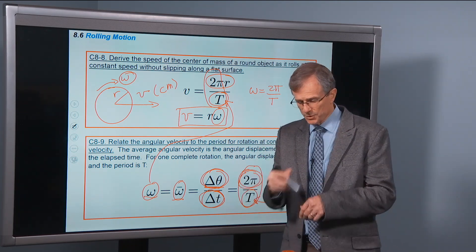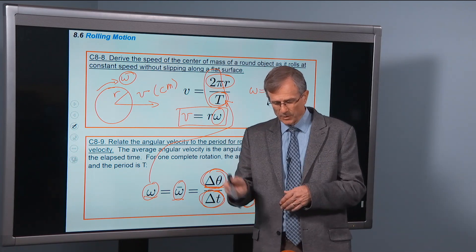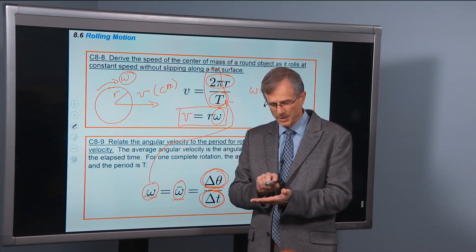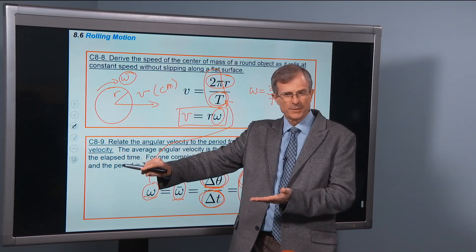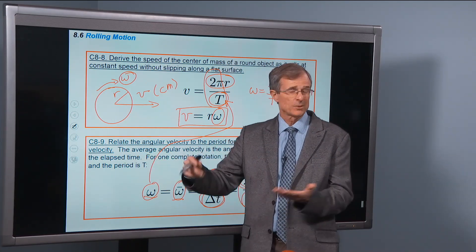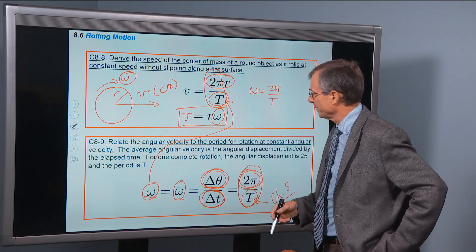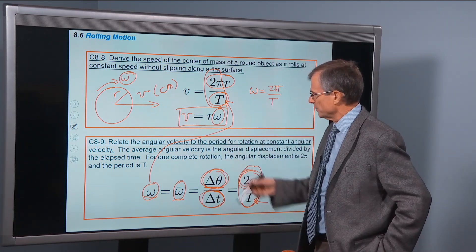Now if you took a circle and just rotate it and skid it along the ground and let it slip along the ground, then its velocity of the center of mass, or its velocity of the axle, is going to be zero. But if it's rolling without slipping, then it obeys this relationship.